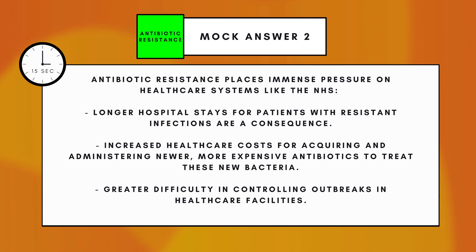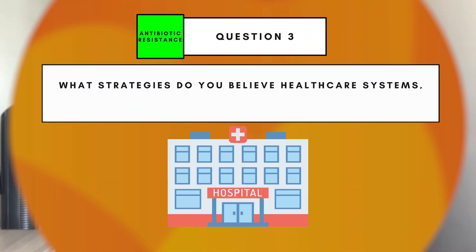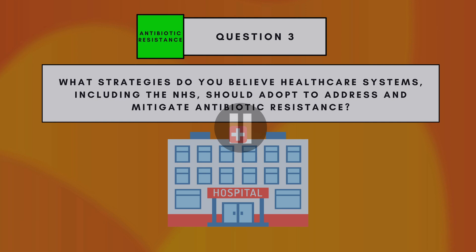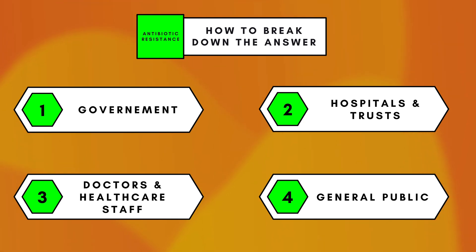That's a pretty short answer for a short question. Question three: What strategies do you believe healthcare systems including the NHS should adopt to address and mitigate antibiotic resistance? I would break down this answer into four categories: number one the government, number two the hospitals, number three the doctors, and number four the general public.